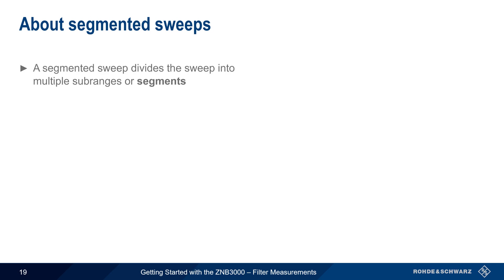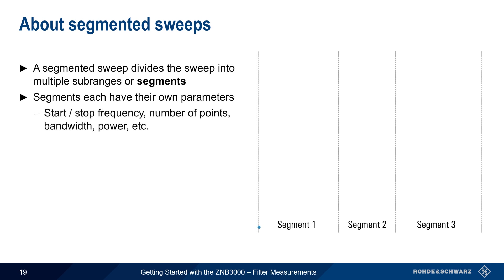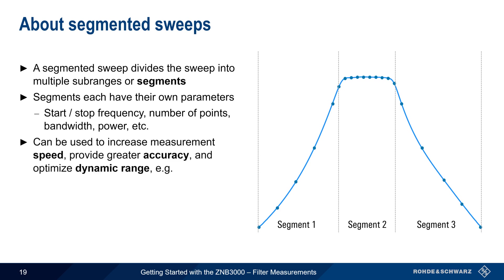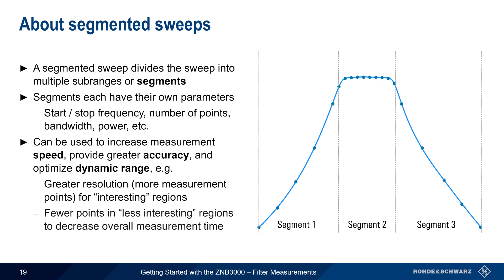The next function we'll look at is segmented sweeps, which divide the sweep range into multiple sub-ranges or segments. Segments are smaller frequency ranges within the total frequency range. Each segment has its own measurement parameters, meaning that the start and stop frequency, number and spacing of points, bandwidth, power, etc. can be set differently for each segment. Using segments for filter measurements can increase measurement speed, provide greater accuracy or resolution, and can be used to optimize dynamic range. More closely spaced points can be used to provide greater resolution for the more interesting parts of a filter trace, such as the passband, and fewer points can be configured for less interesting regions to reduce overall measurement time.